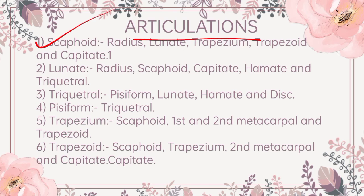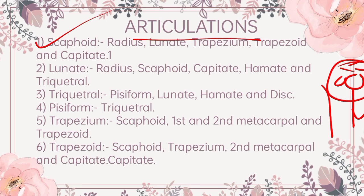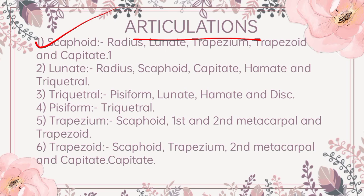Now we will see the articulations. Scaphoid articulates with radius — here is ulnar, here is radius, and here we have scaphoid. It also articulates with trapezium, trapezoid, and capitate. Moving further to lunate: proximally with radius, laterally scaphoid, capitate, hamate and triquetral articulation.